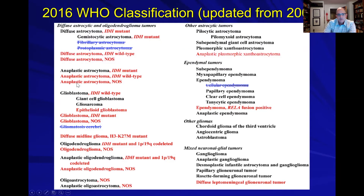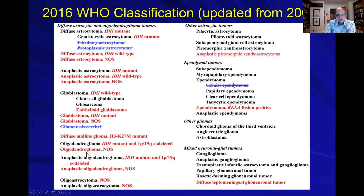On the left are the diffuse astrocytic and oligodendroglioma tumors — diffuse astrocytomas, anaplastic astrocytomas, and glioblastomas — further subdivided into IDH mutations and wild type, which we'll discuss later. There are a few oddities under glioblastoma referred to by their histology. Moving down the list, there's an unusual diffuse midline glioma in the younger population that commonly carries the specific mutation H3 K27M.